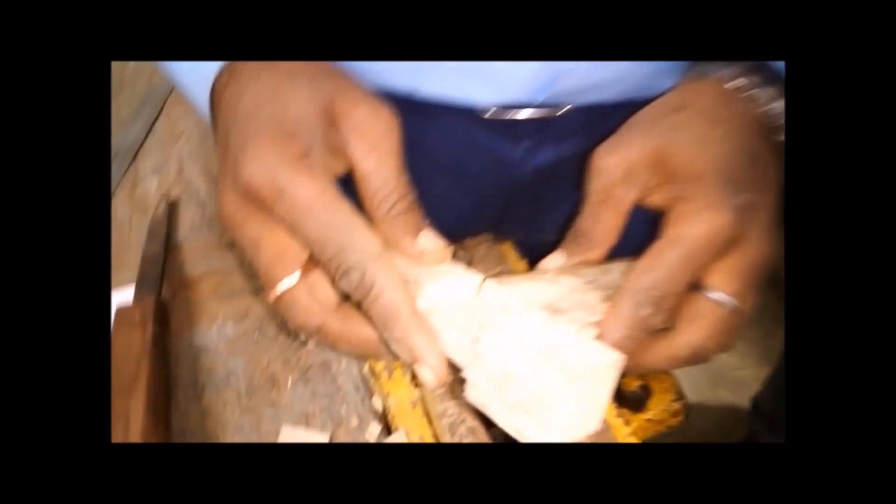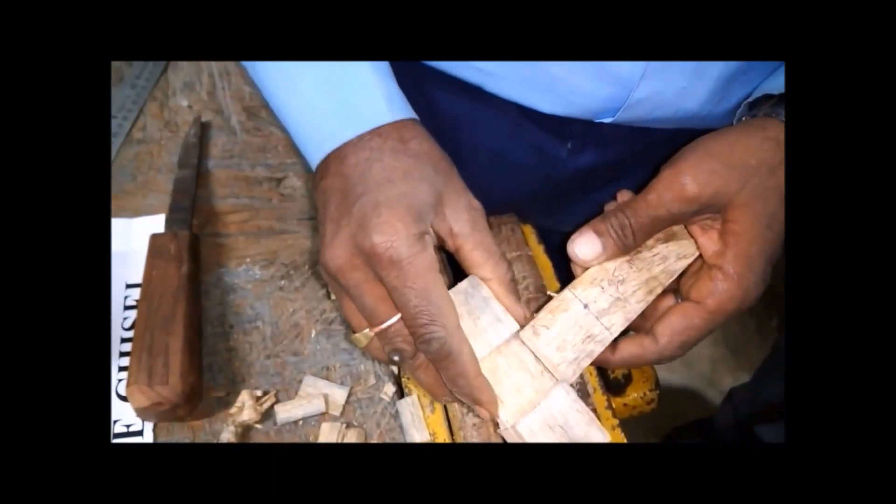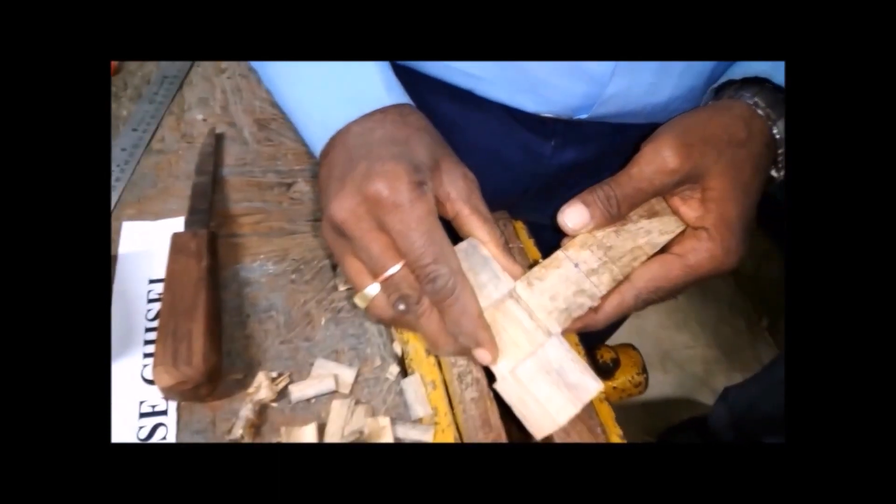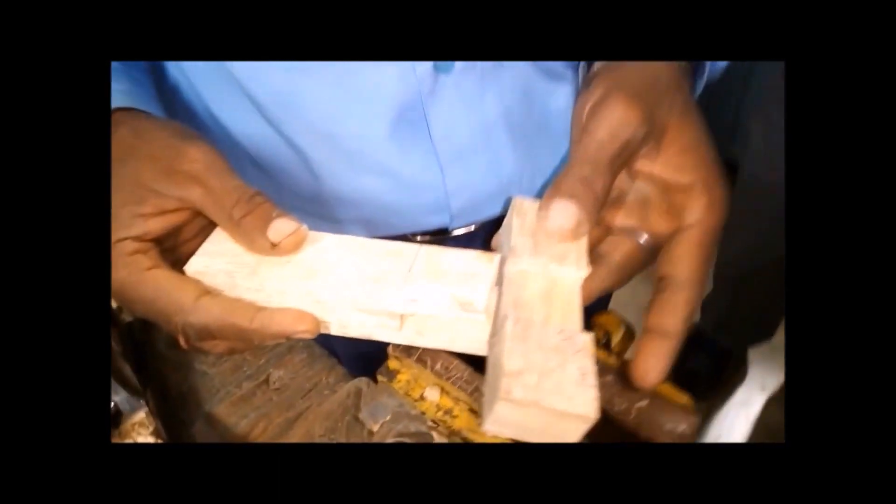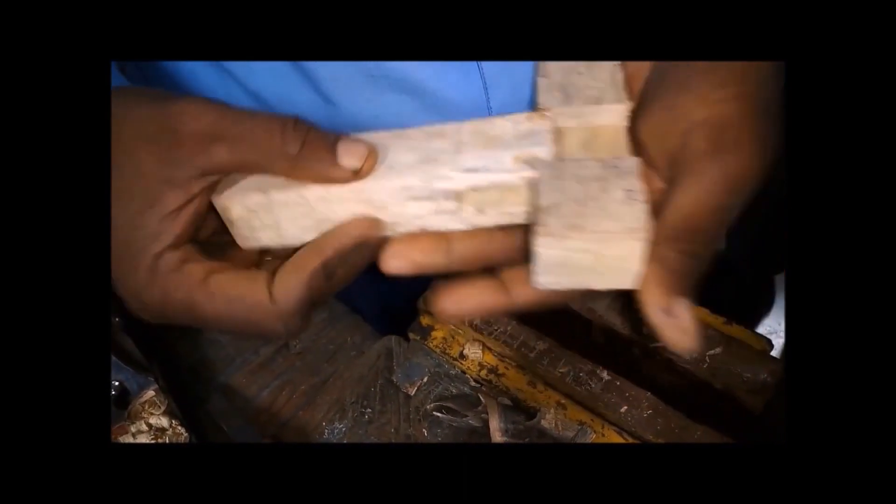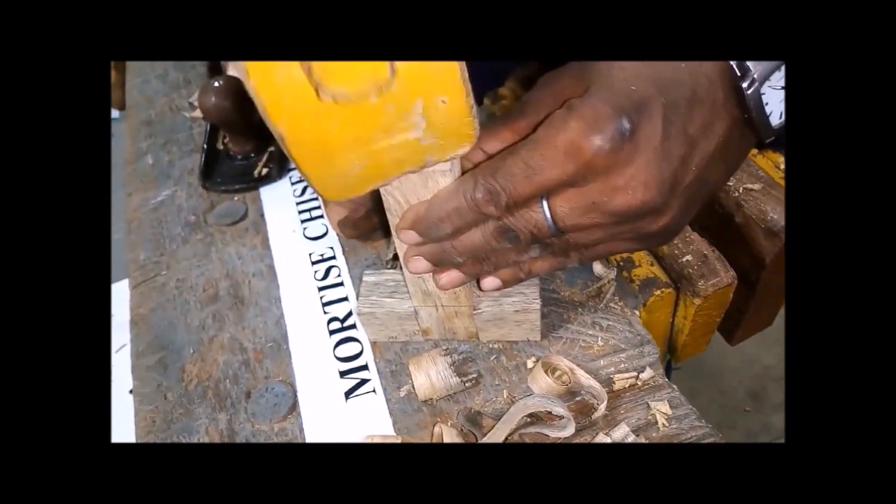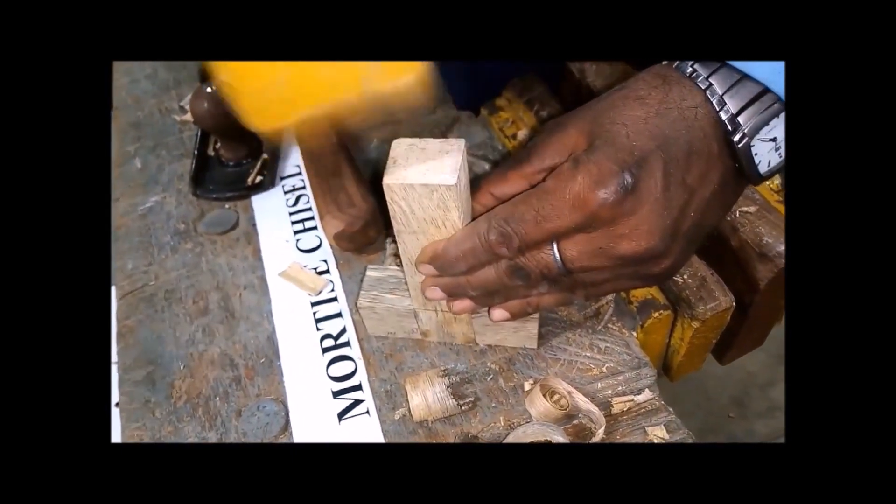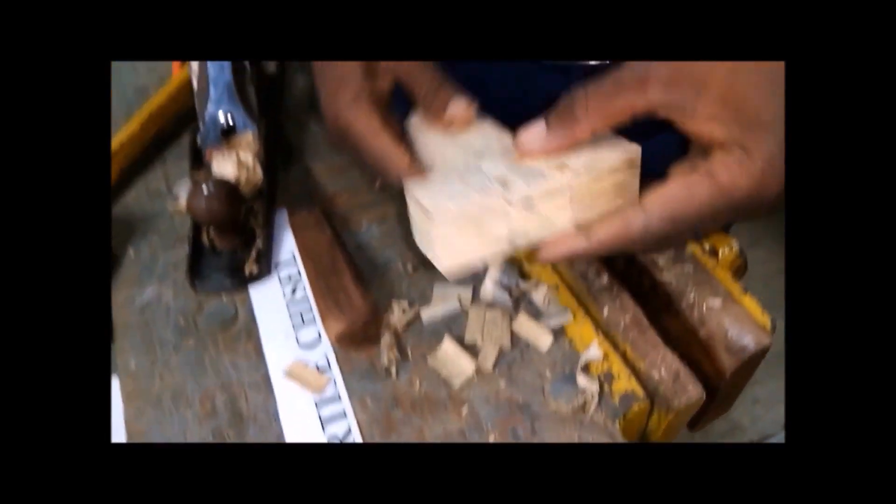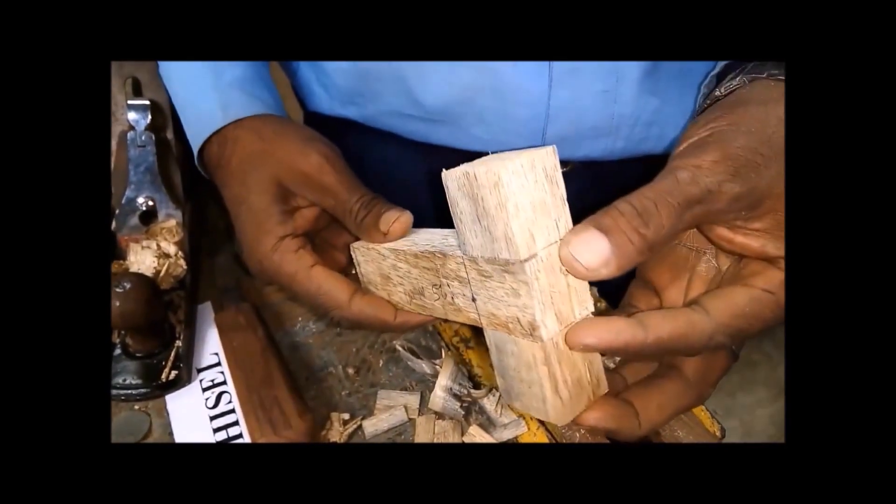Now mortise is ready. We will test the fit of the joint. So this is the finished T-bridle joint.